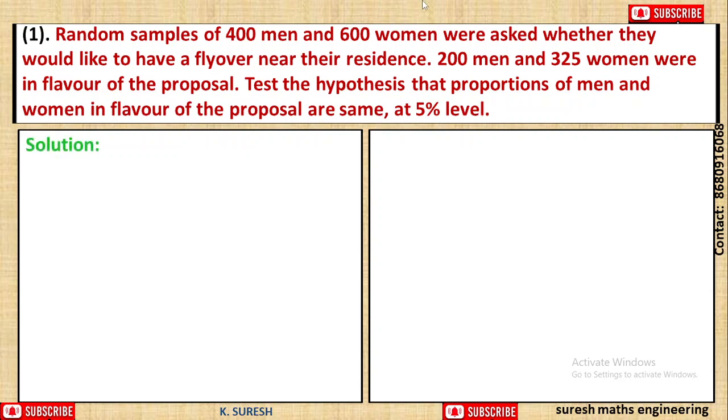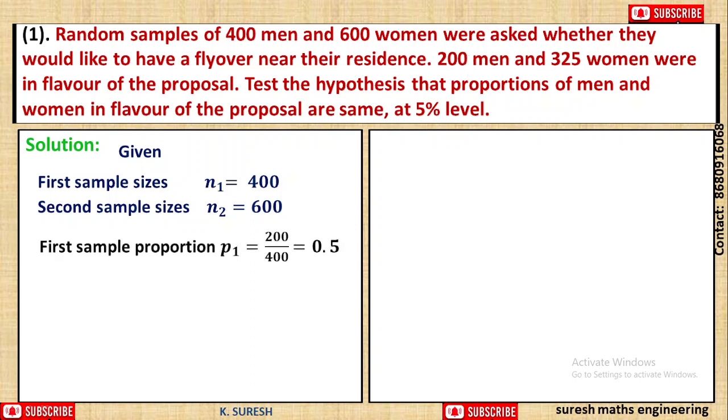Here are two sample sizes, first men and women. First sample size N1 is 400. Second sample size N2 is 600. Out of 400 men, 200 men are in favor of the proposal for flyover near the residence. So first sample proportion p1 is equal to 200 out of 400, which simplifies to 0.5.